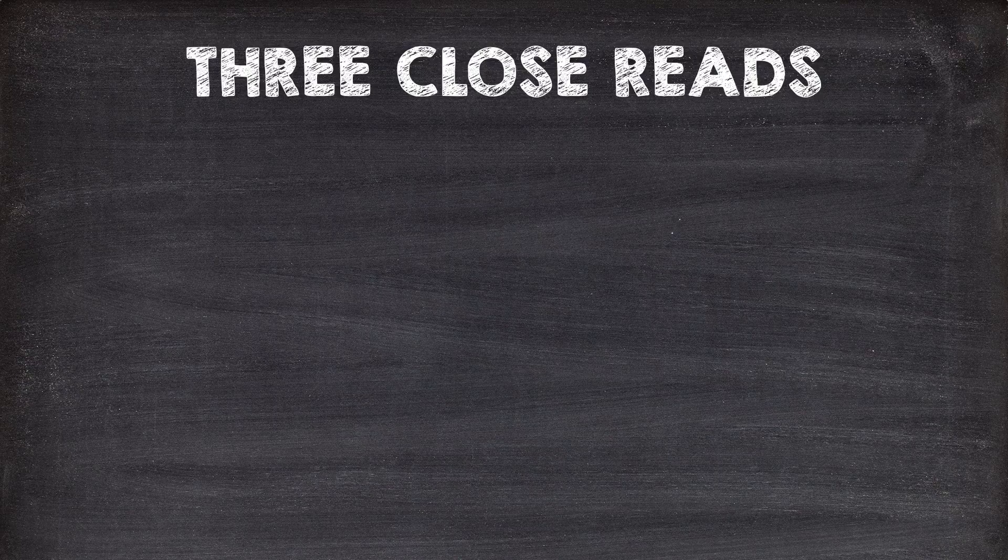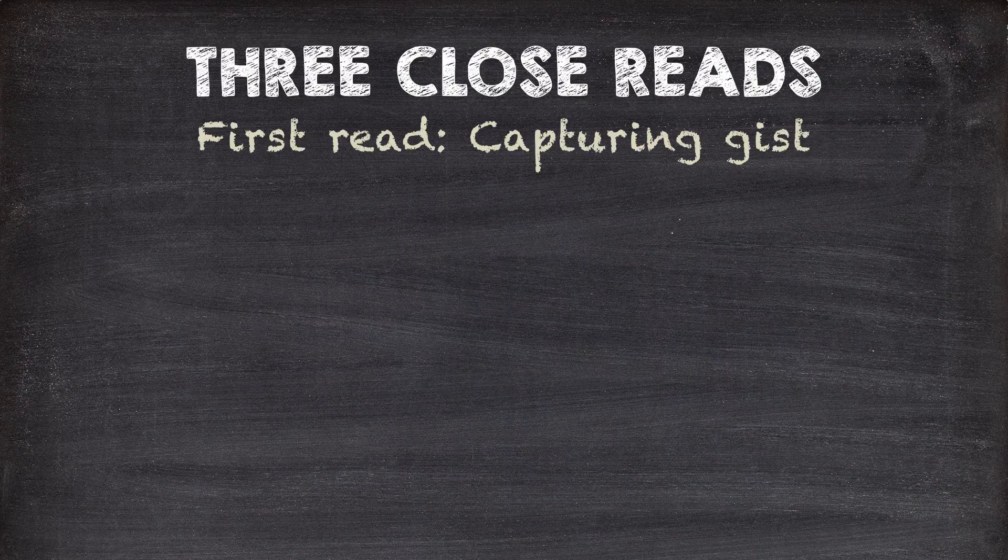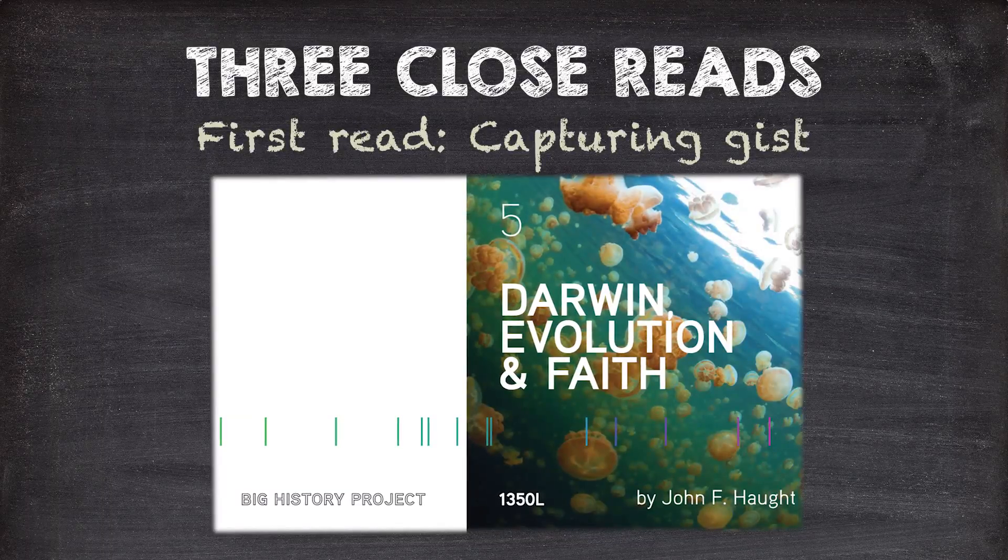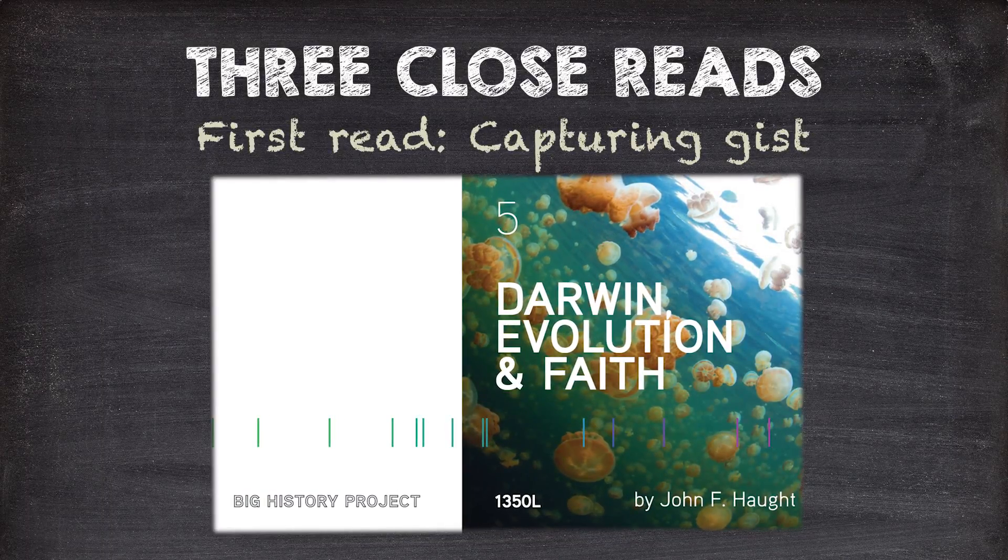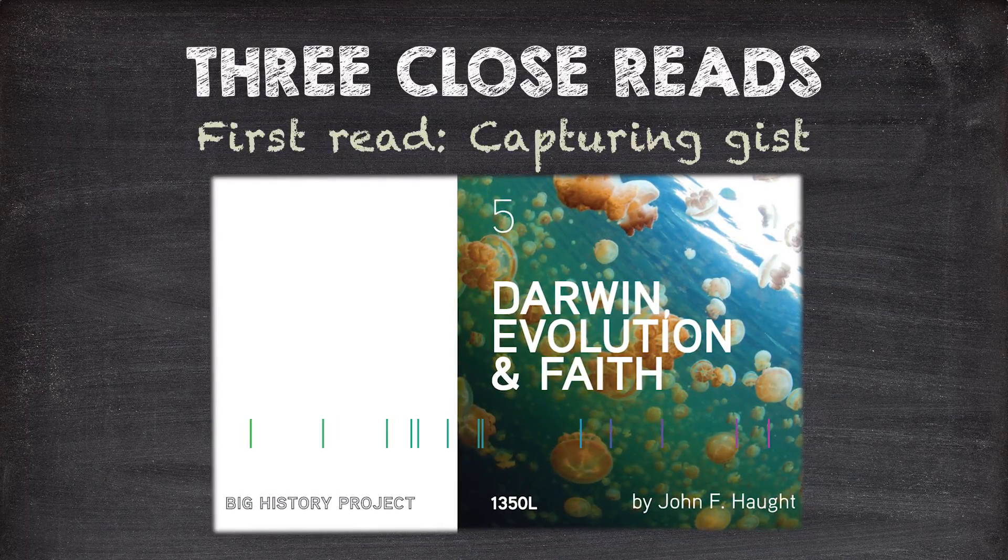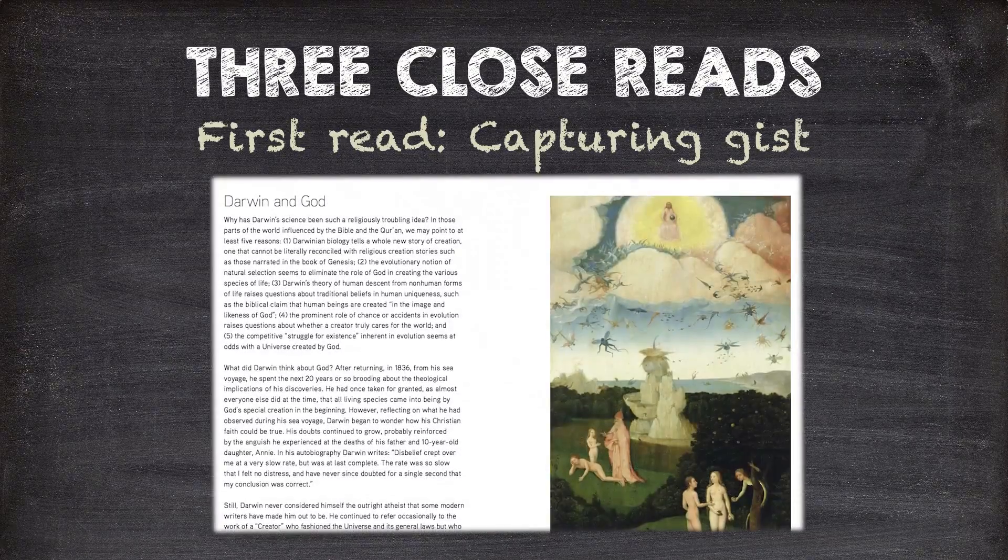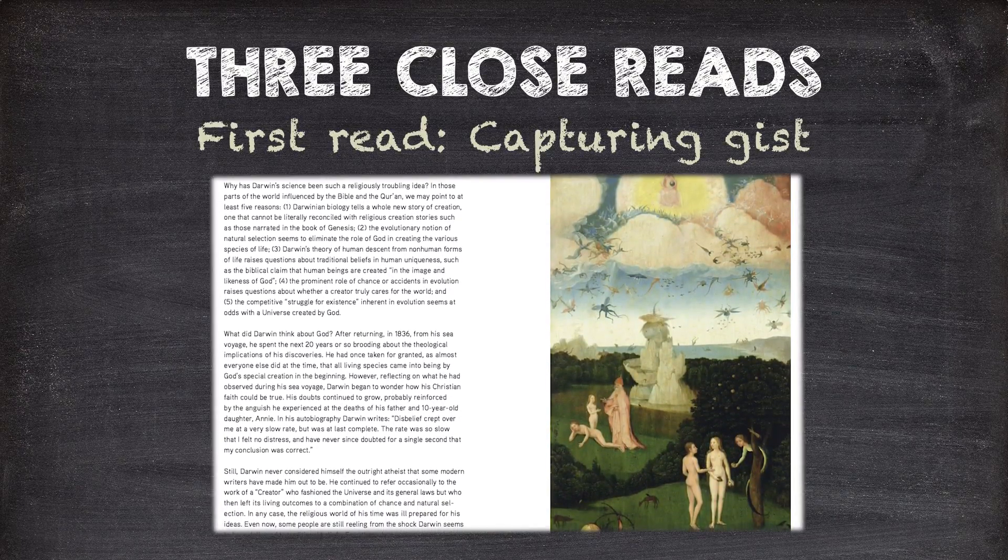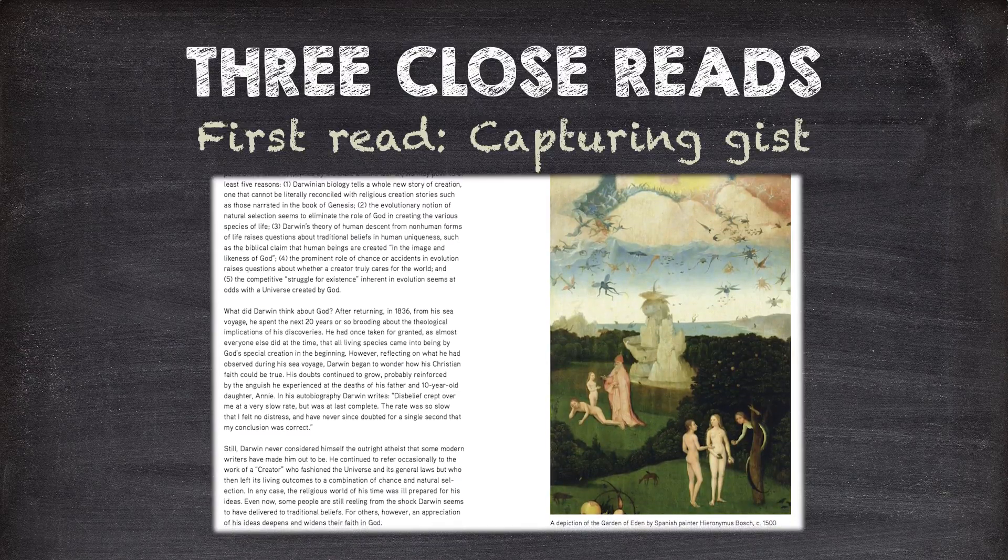The first read is actually just a preview of the text. We call it capturing the gist. The first step is the easiest and will not scare off reluctant readers. Here we ask students to look at the title, headings, author and what type of article it is, in order to make predictions about what they think the article will be about.